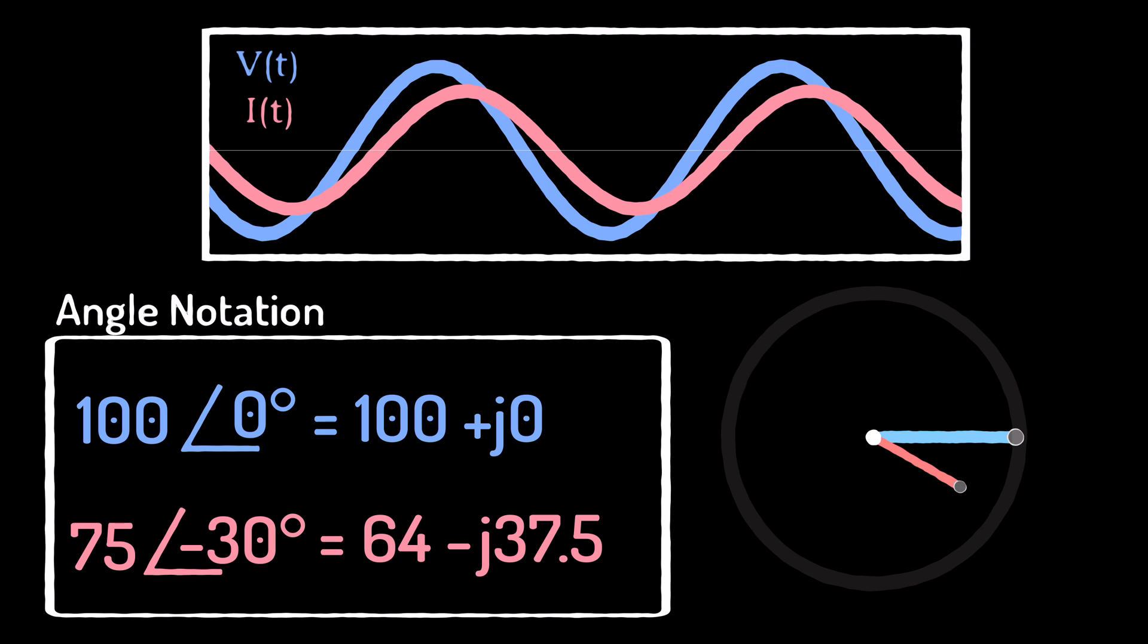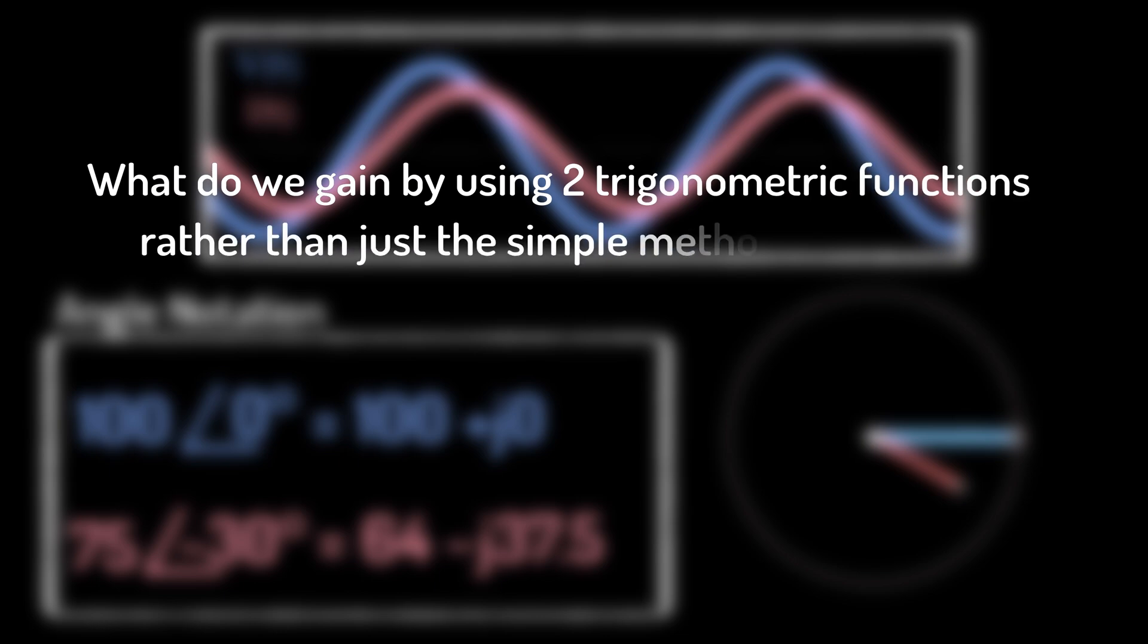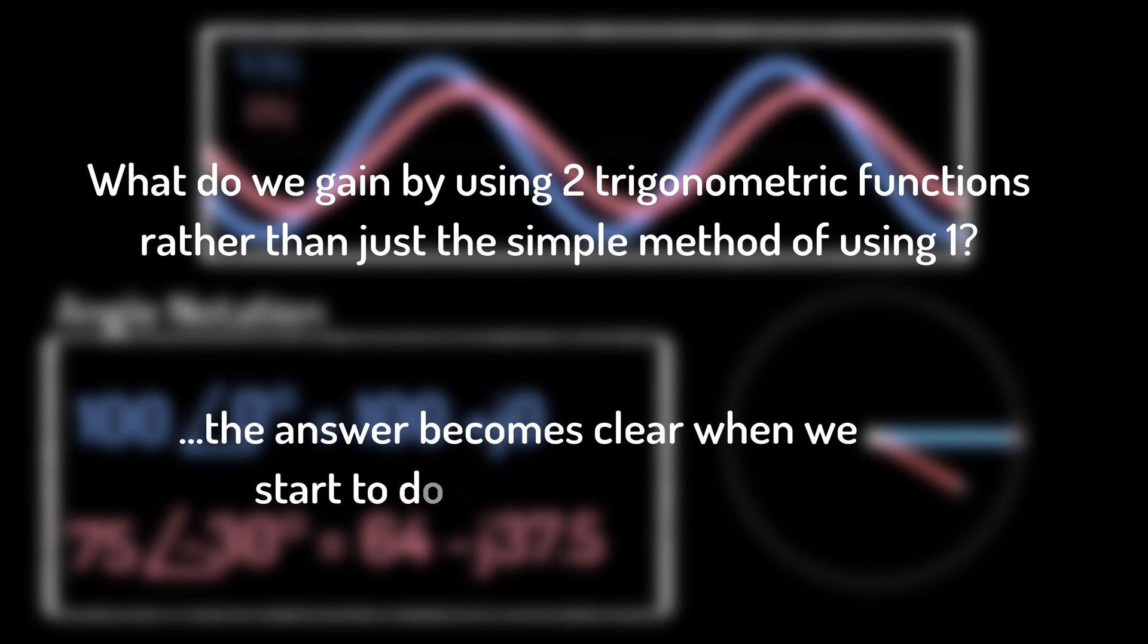After all, we can always return to describing our voltages and currents as just a single sinusoidal function. What do we gain by essentially mapping these variables to two trigonometric functions? Well, the answer should become clear when we look at an example and we start to factor in impedance.